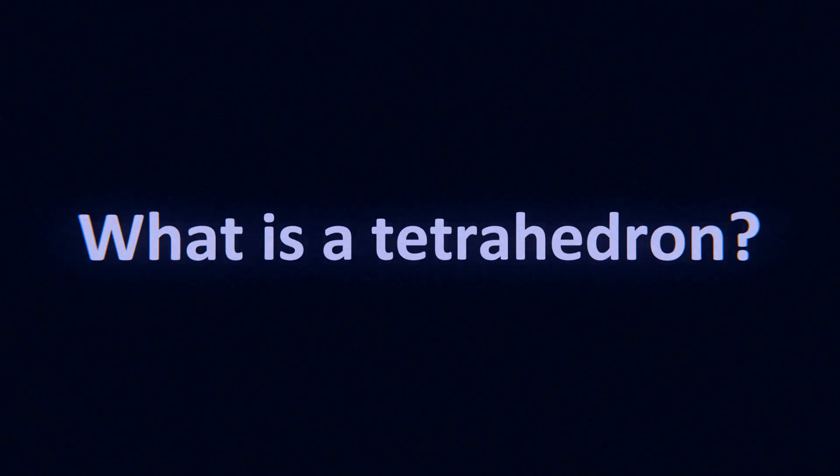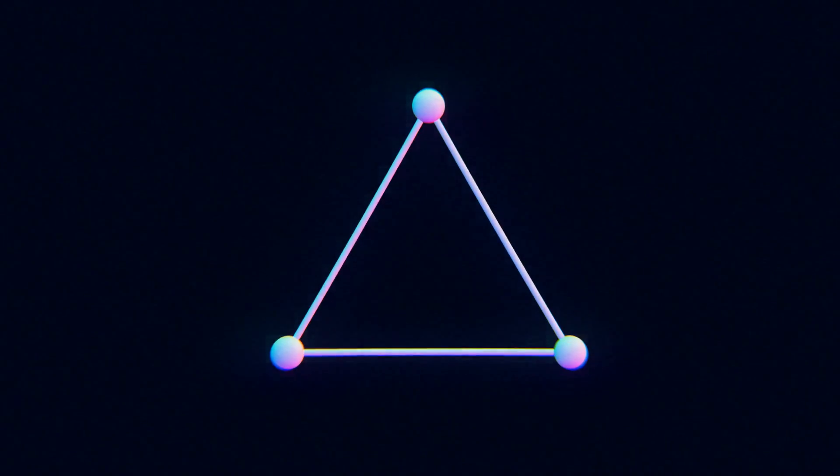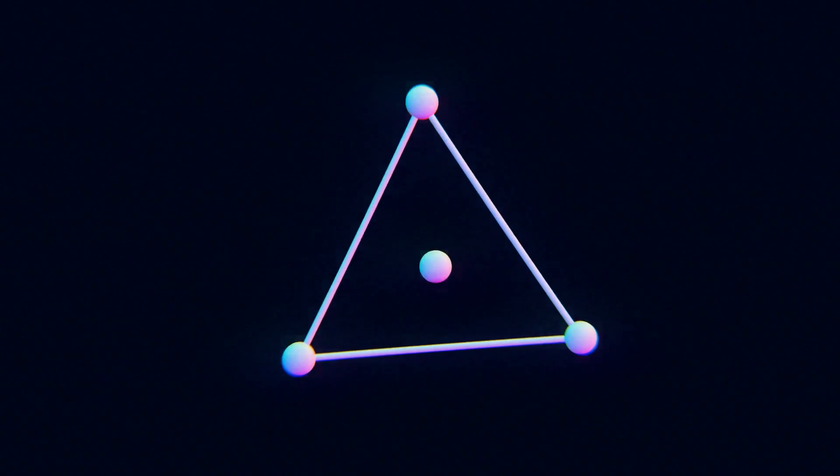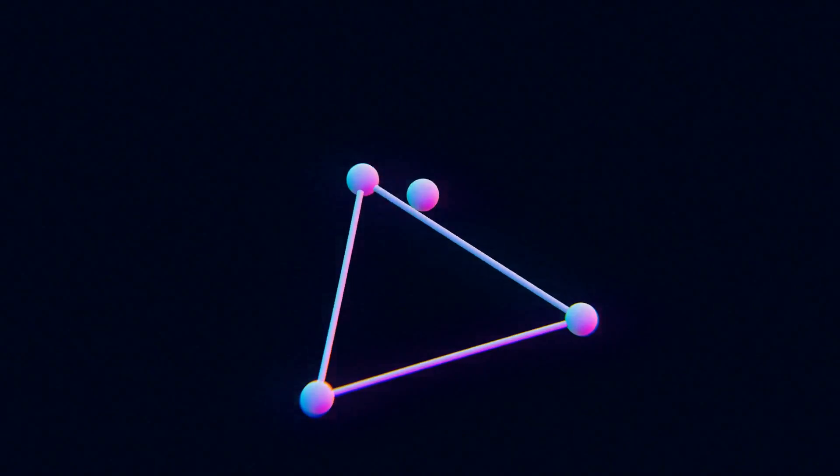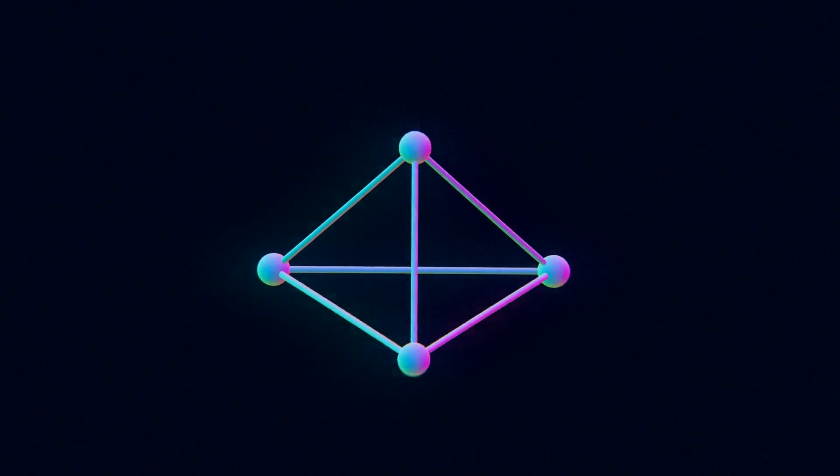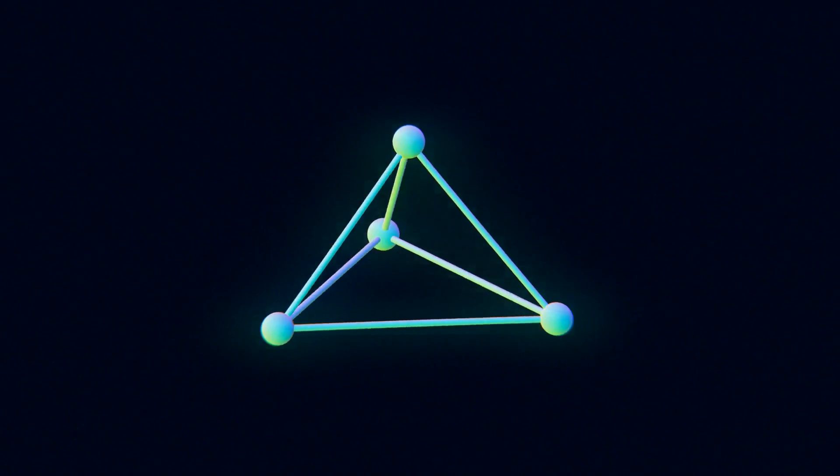What is a tetrahedron? It's a three-dimensional triangle. Take a triangle, add a point, connect everything up, and you've got a tetrahedron.